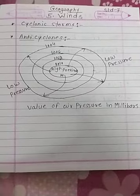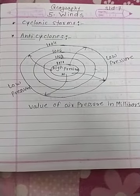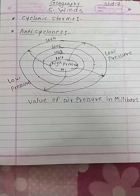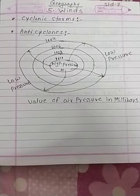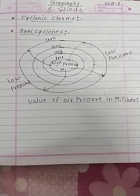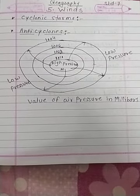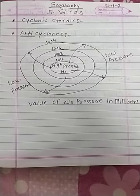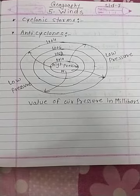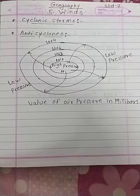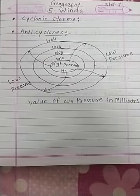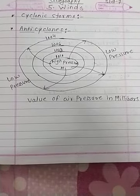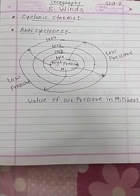Under specific atmospheric conditions, the air pressure in a particular region increases and the pressure in the surrounding areas remains low. In this situation, wind blows from the center towards the surrounding area in a circular manner. In the northern hemisphere, these winds blow in a clockwise direction, whereas in the southern hemisphere, they blow in an anti-clockwise direction. During an anti-cyclone, the skies are clear.